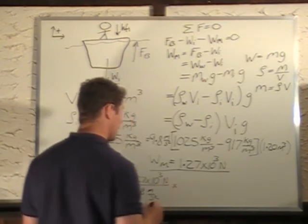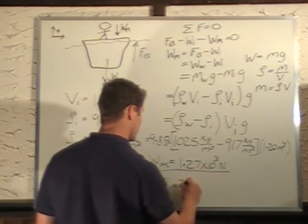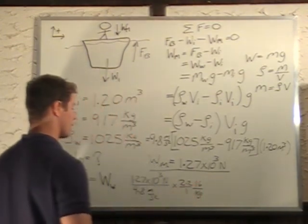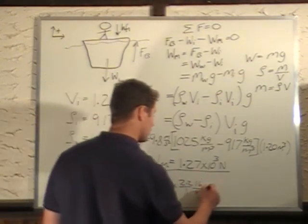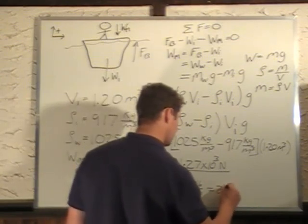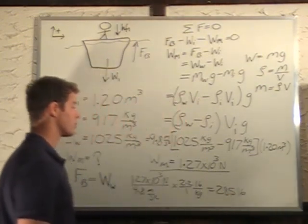And then we multiply by the number of pounds per kilogram. So there's 2.2 pounds for every kilogram. So I convert this kilogram into pounds. So the weight is 285 pounds. So that's your final answer.